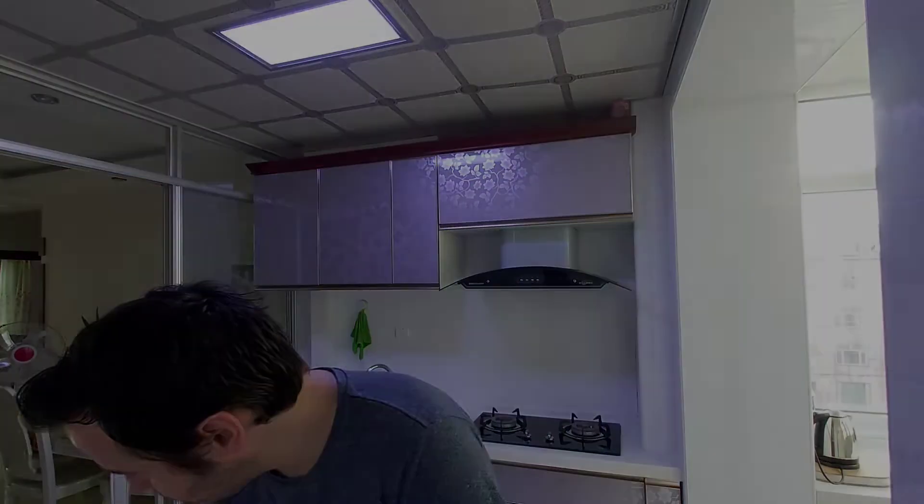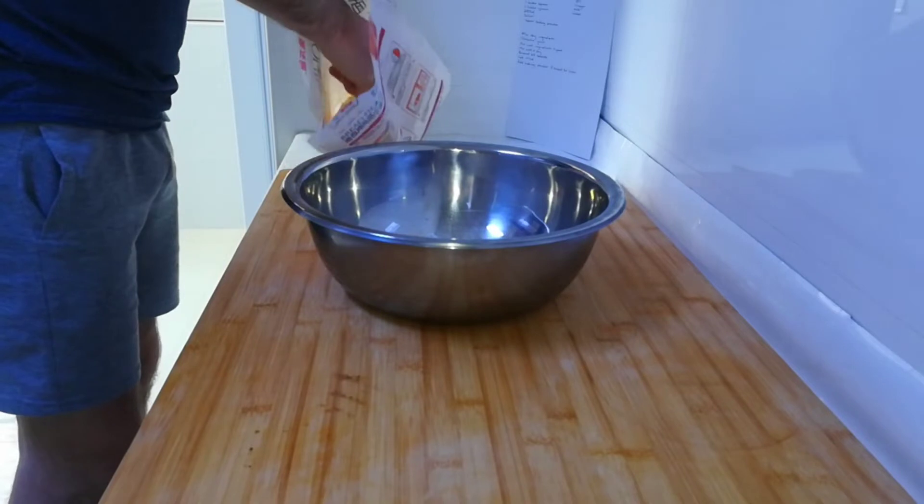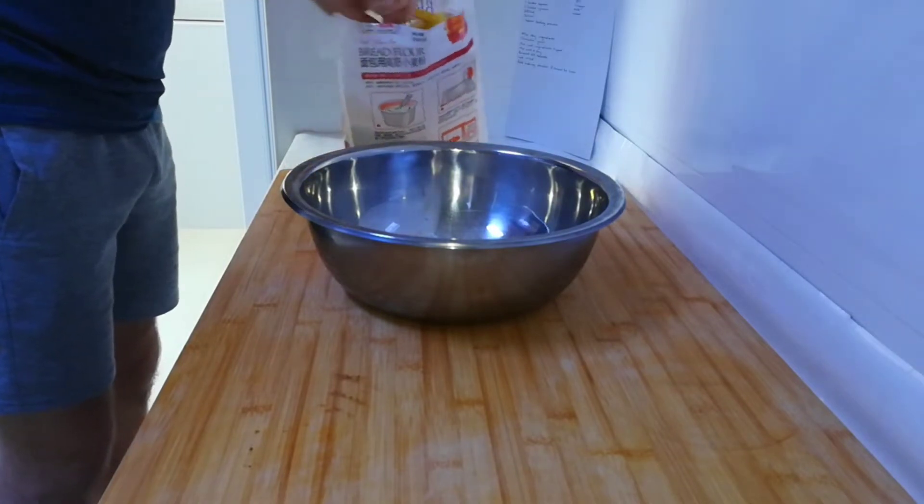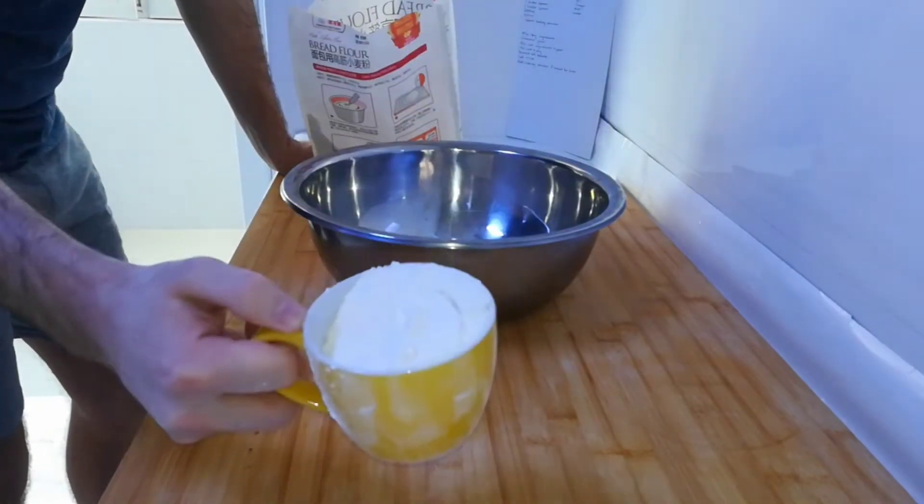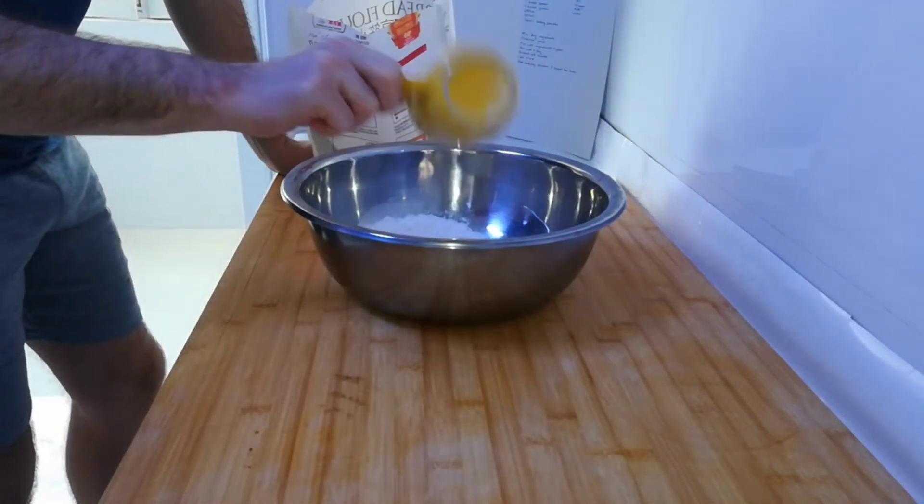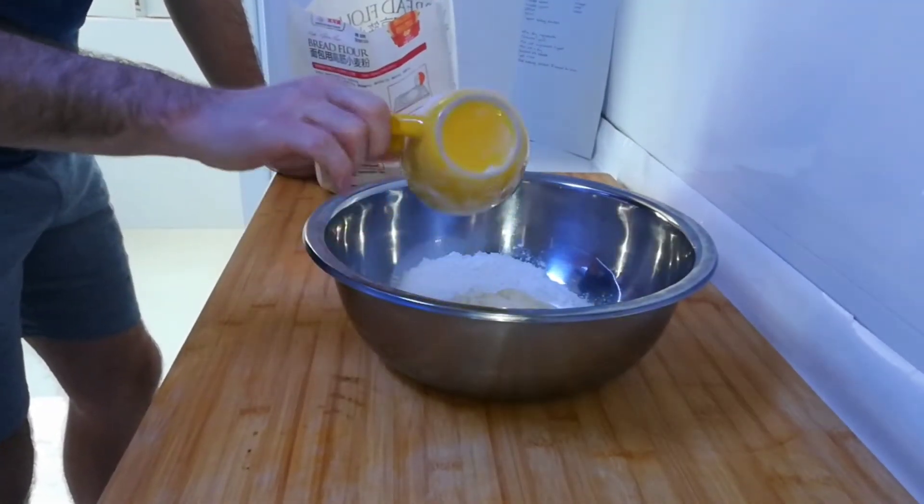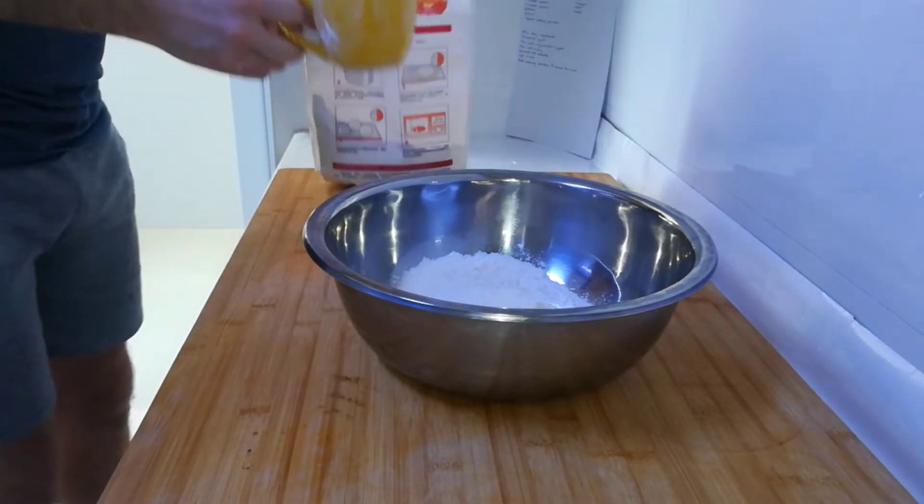Apparently it's supposed to make it fluffy so it's not so dense and dry. Okay, that is one cup. There's two cups, we'll put the two cups in a large mixing bowl. There we go, bread flour aside.